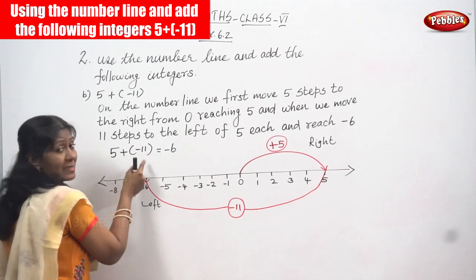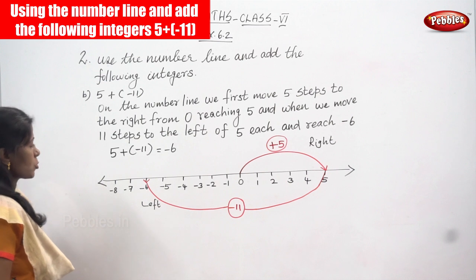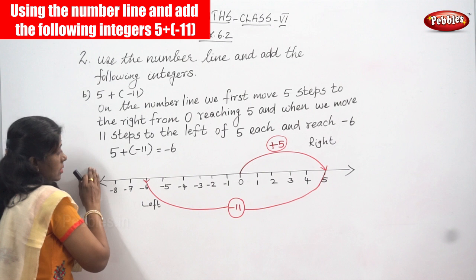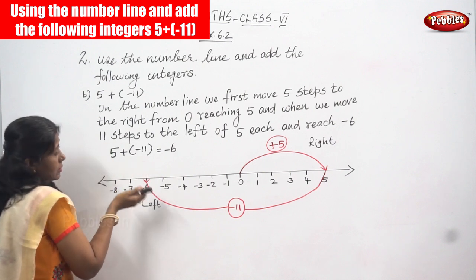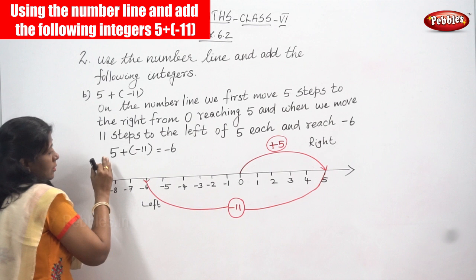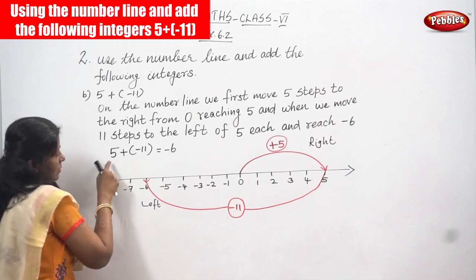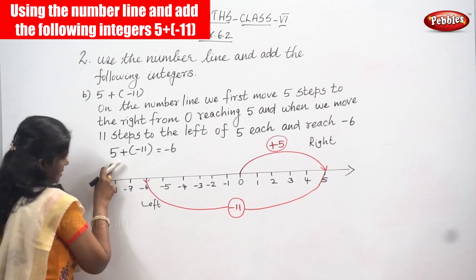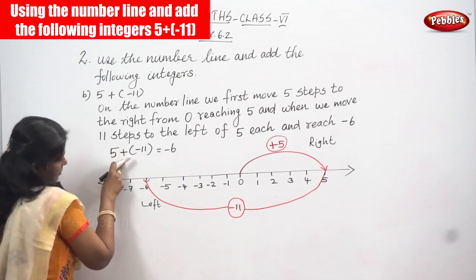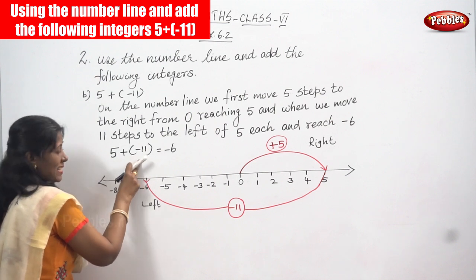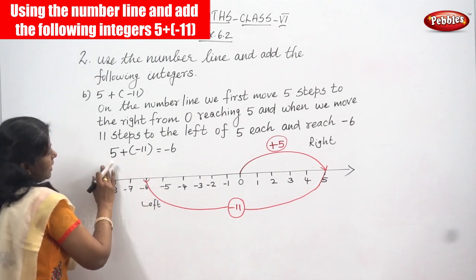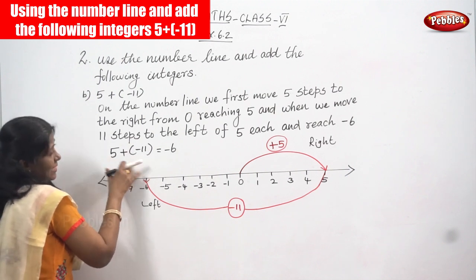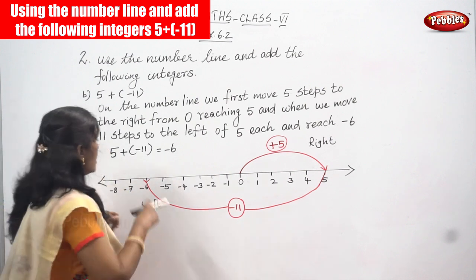So 5 is a positive integer and -11 is a negative integer, and we are going to add them together. When you have different signs — whether positive or negative — you have to check: the first number is a positive integer, and the next number is minus 11, which is a negative integer. If you have different signs, you are not going to add — you are going to subtract.